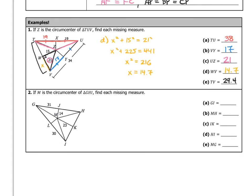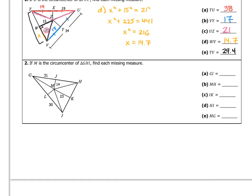We'll do the same thing on number two — be sure you're writing down questions so you can ask them in class. Number two: M is the circumcenter of this triangle; find each missing measure. Starting with GI: we know GL and LI are equal to each other. Since LI is 30, GL is also 30, therefore GI has to be 60.